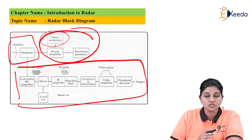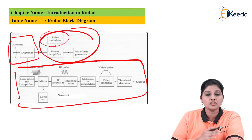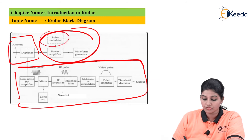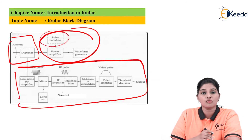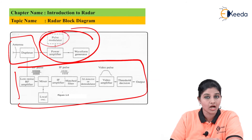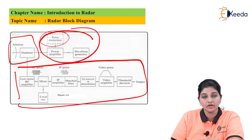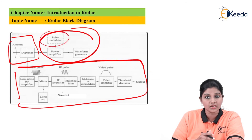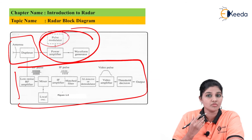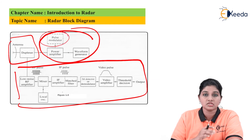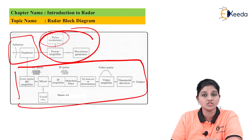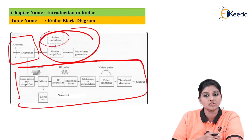The IF amplifier, matched filter, second detector, and video amplifier together form an envelope detector, which detects the pulse modulation and rejects the carrier frequency. In a Doppler shift modulator, the envelope detector is replaced by a phase detector. At the output, the decision is made whether an object is present or not based on a threshold decision. If the output signal value is much higher than the threshold value, the target is assumed to be present at a certain location.